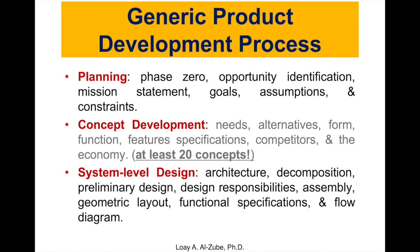The next stage is system level design, where we will look at the architecture of the product. We will decompose the product or idea into subcomponents — ideally fewer than 10 parts, ideally around five. We will create a preliminary design and assign responsibilities to different members of the team. We will decompose the product into subcomponents, get into the design details, and then reassemble our components. We will draw a geometric layout and then do the functional specifications, looking at the flow diagram of how we move to the following phases.